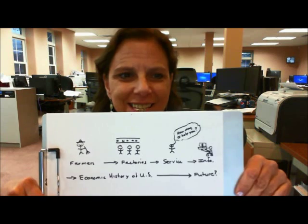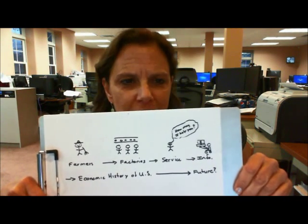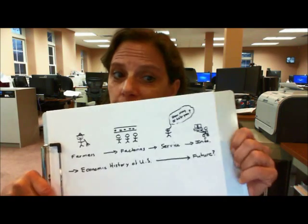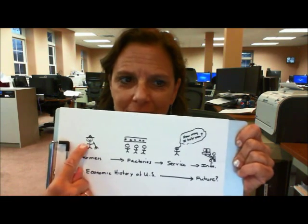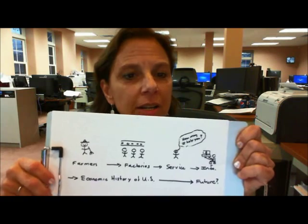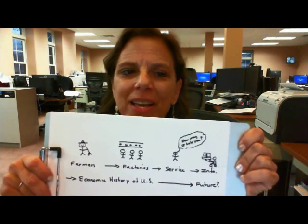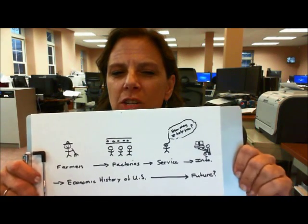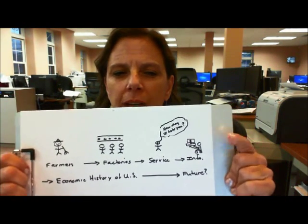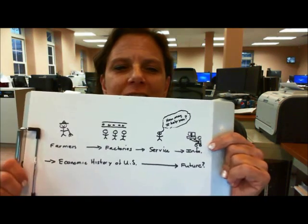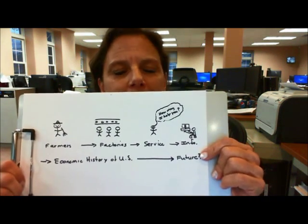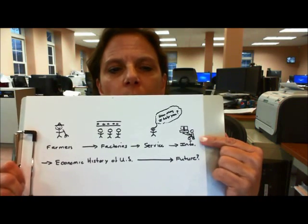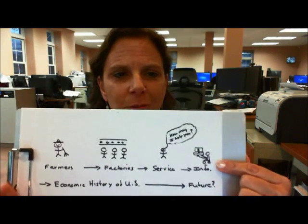Finally, we need to talk about the economic history of the United States. We began as farmers, and we moved into the factories. Then we moved into the service industry. But we are moving into what we believe to be the next age — the information age — with people working on computers. So the question is, where in the future will the United States be in an information economy?